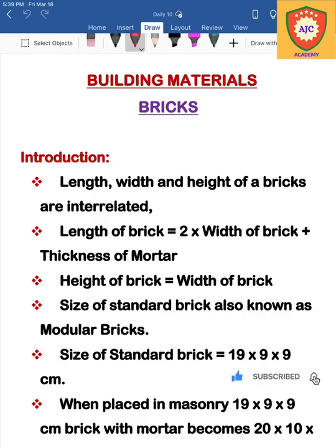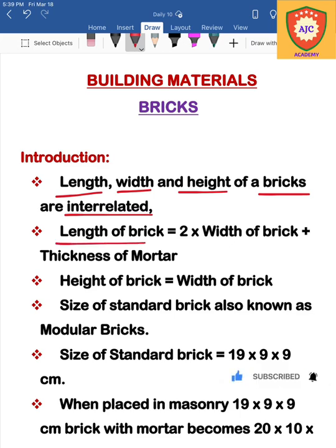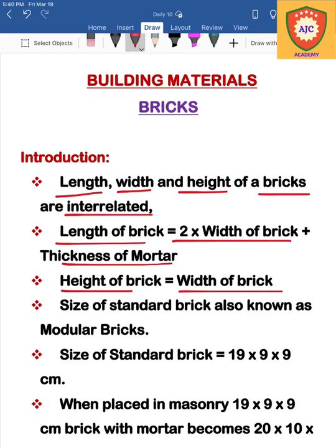First, we will talk about the relationship between length and height of a brick. The equation is: Length of brick equals 2 times the width of brick plus the thickness of mortar. Also, the height of brick is equal to the width of brick.